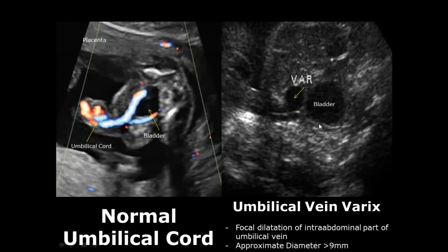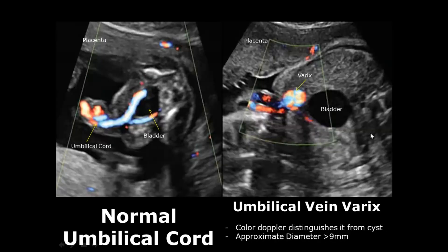Umbilical vein varix is a focal dilatation of the intra-abdominal part of the umbilical vein. We will see an anechoic structure near the bladder — this is the dilatation of the umbilical vein, and it usually measures around 9 mm in diameter. When we apply color Doppler, we can see internal flow, which allows us to distinguish it from a cyst.